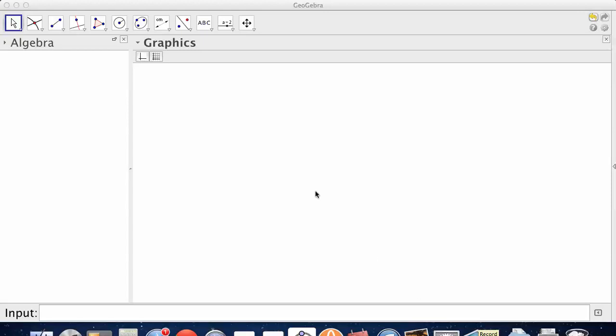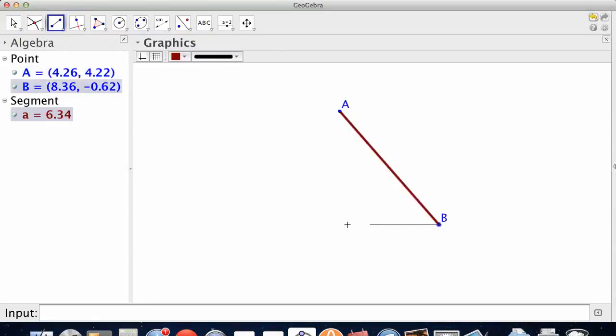We are dealing with lines inside of triangles. Let's go after an angle bisector. We're going to cut an angle in half.